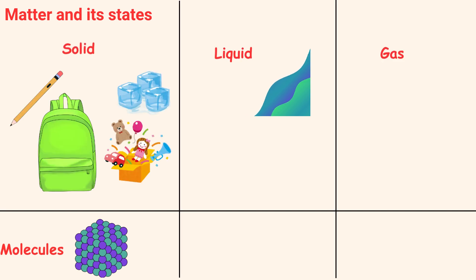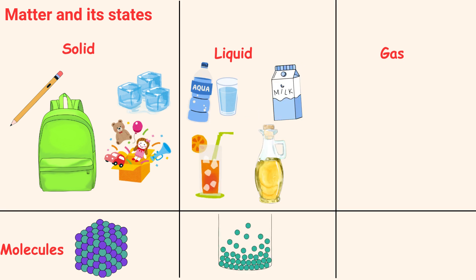A liquid has no fixed shape, but it takes the shape of the container it's in, like water, milk, juice, or oil. In liquids, the particles are a little loose, so they can move around each other.